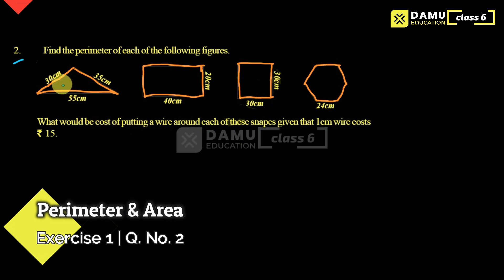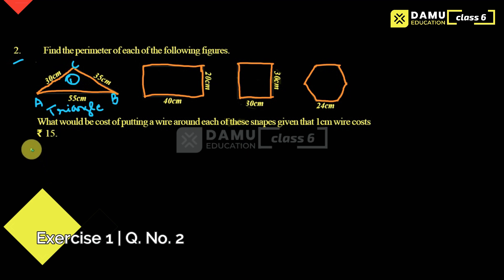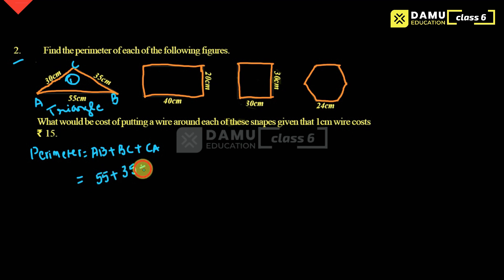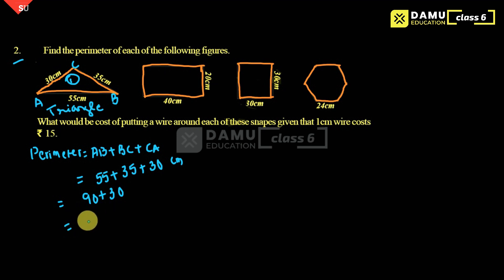For the first shape, a triangle ABC, the perimeter is the sum of all sides: AB plus BC plus CA. AB is 55, BC is 35, and CA is 30 centimeters. So 55 plus 35 equals 90, plus 30 gives us a perimeter of 120 centimeters.